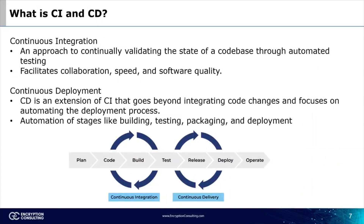We will now discuss the CI/CD pipeline and the benefits implementing it in your environment can provide to your organization. What are CI and CD? CI is continuous integration — an approach to continually validate the state of a code base through automated testing. It facilitates collaboration, speed, and software quality.